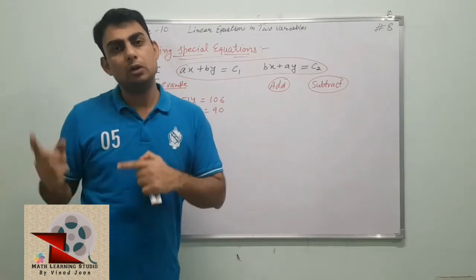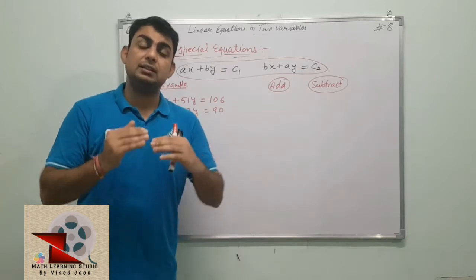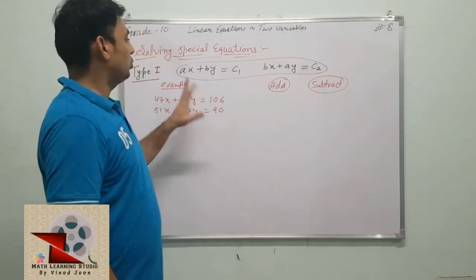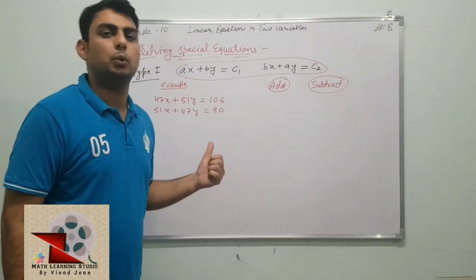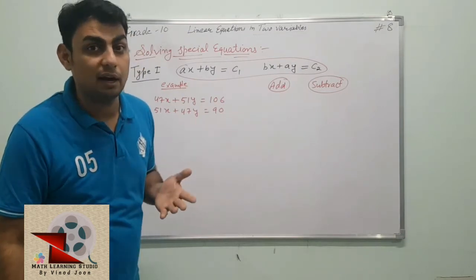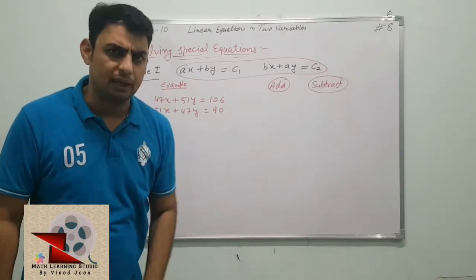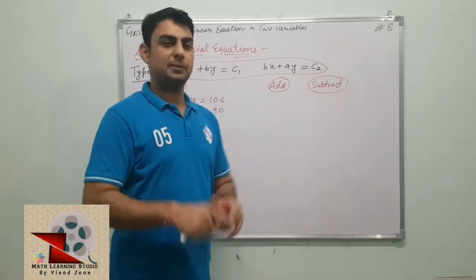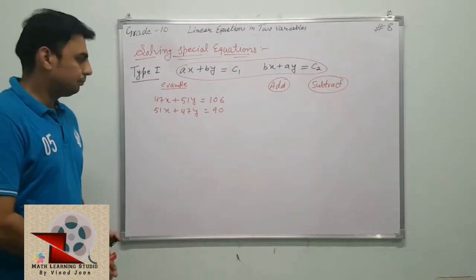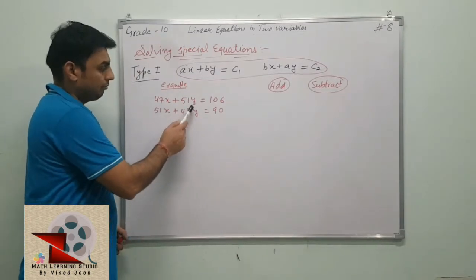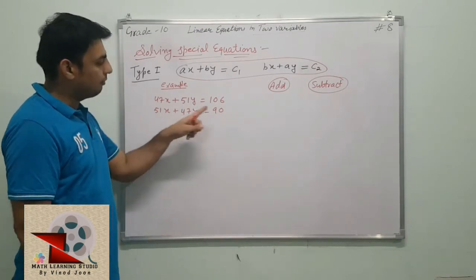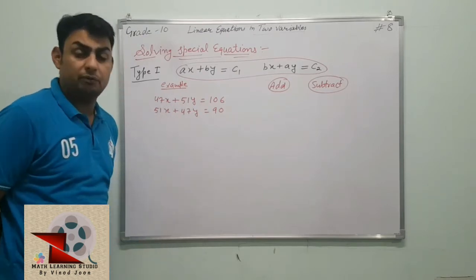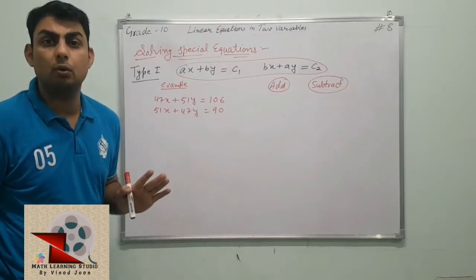Usually in equations the a or b values are smaller numbers, one digit or two digit. But if there are larger numbers like two digit or three digit numbers, then you would have to use cross multiplication method, which can be difficult with larger coefficients. So I have taken an example here: 47x + 51y = 106, and 51x + 47y = 90. These are co-prime numbers, no common factors.